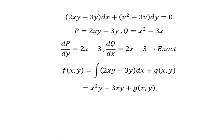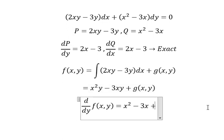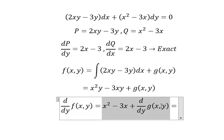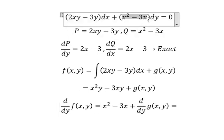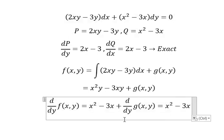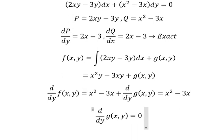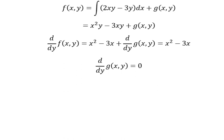Next we need to do the first derivative of f with respect to y for both sides. So this one we have x squared minus 3x plus d/dy g(x,y), and we know that this equals to Q which is x squared minus 3x. Now we simplify for both sides and we have d/dy g(x,y) equals zero. Later we put the integration for both sides.